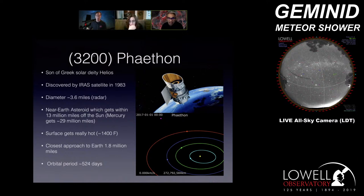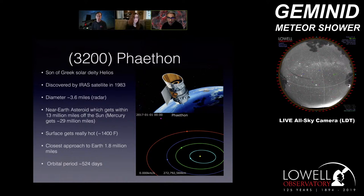Unlike most asteroids discovered today, Phaethon was discovered by a satellite and not ground-based telescopes. Before surveys like the Catalina Sky Survey in Arizona, Pan-STARRS in Hawaii, or NEOWISE, there was a satellite called IRAS — an infrared telescope with a mirror of about 22 inches that took pictures of the sky in four different wavelengths. Astronomers looking through its images found Phaethon. Phaethon is relatively large for a near-Earth asteroid — about 3.6 miles across, as measured by the Arecibo radar.